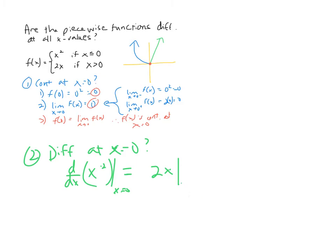So we plug in: 2 times 0 equals 0. The derivative from the left is zero. This makes sense — on the parabola, the vertex at the origin is where the function levels off and the tangent is horizontal, giving a slope of zero.